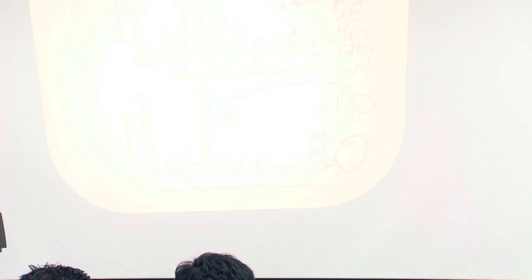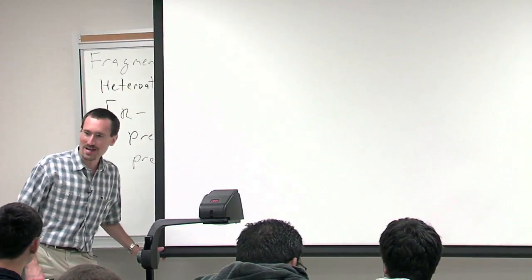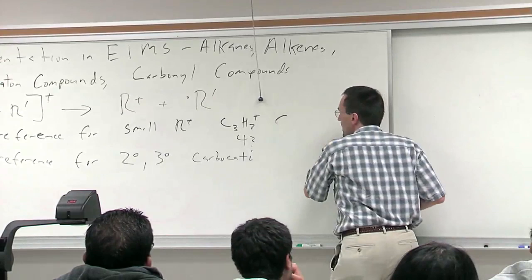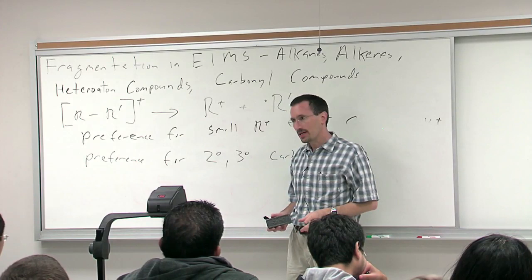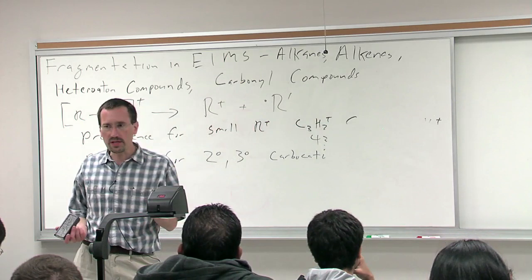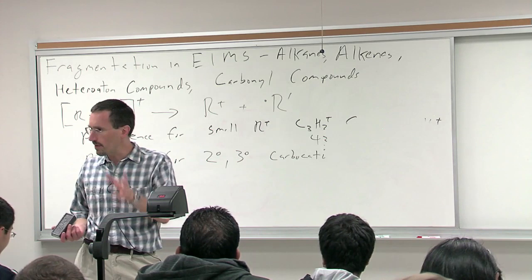Great question. So the first thing that people often do is blow up the region where they suspect the molecular ion is. Now the second thing is, let's say you have a little bit of information. Remember the nitrogen rule that I mentioned, the fact that in the EI mass spectrum if a compound has an odd number of nitrogens, if it has one nitrogen or three nitrogens or five nitrogens, the molecular weight is odd.